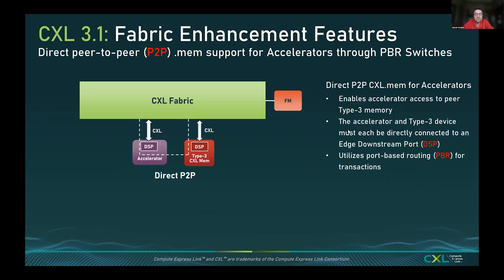Any device can talk to any other device without having to traverse the normal tree, which increases congestion on the top branches. Device-to-device communication can happen through a switch without having to bother the CPU or the link that goes to the CPU, using peer-to-peer CXL.mem. Since it uses CXL.mem, it can be cached — so accelerators may touch, read, or write Type 3 devices and cache the data they receive locally. That is done based on port-based routing that the switch offers.